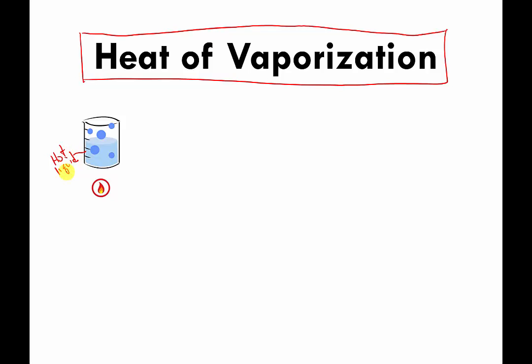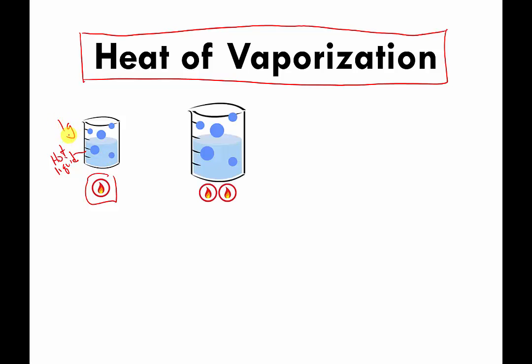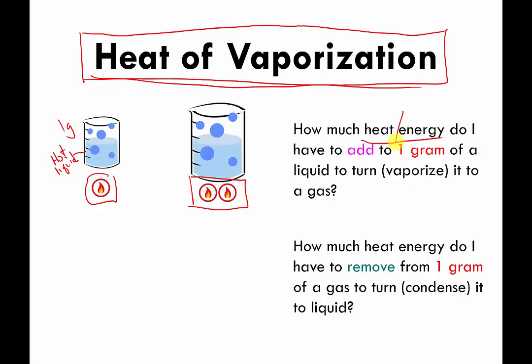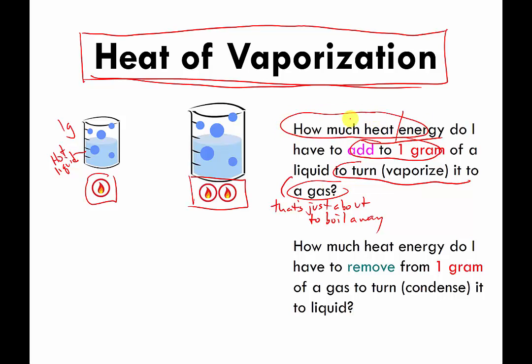The concept is the same. Imagine I have one gram of very hot liquid that's just about to boil away, and it takes one candle's worth of energy to boil it. If I have twice as much — two grams — it'll take two candles' worth of energy to boil it all away. Heat of vaporization is how easy or difficult it is to vaporize something. More formally: how much energy do I have to add to one gram of a liquid that's just about to boil, right at the boiling temperature, to vaporize it into a gas? It'll be a different amount for different substances.